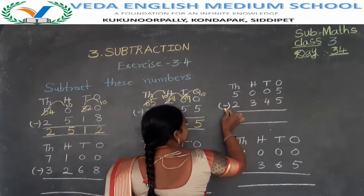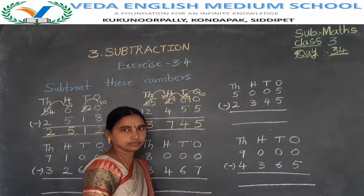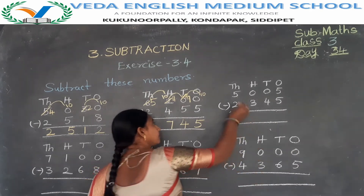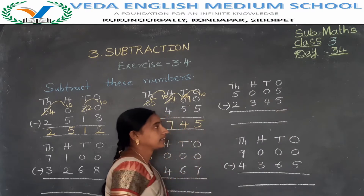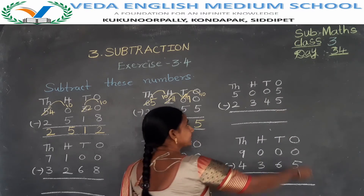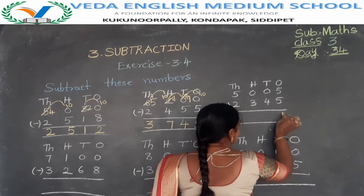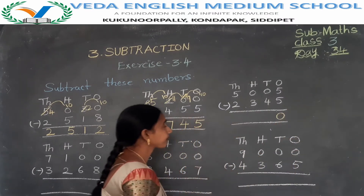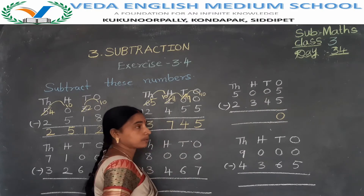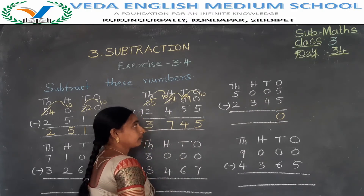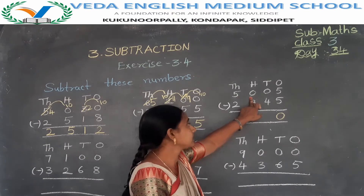Third problem: 5005 minus 2345. In the ones place: 5 minus 5 is 0. In the tens place: 0 minus 4 is not possible. The hundreds place also has 0, so how to take a borrow?